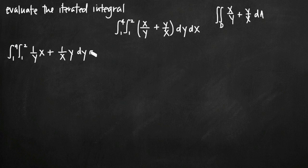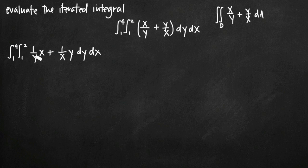I've split up the function to show numerators and denominators separately. Since we're integrating first with respect to y, let's deal with the first term: 1 over y, with x as a coefficient. Since x is treated as a constant — just like any number — it's simply a coefficient on the 1 over y term. The integral of 1 over y is natural log of y, so we'll have x times the natural log of y.